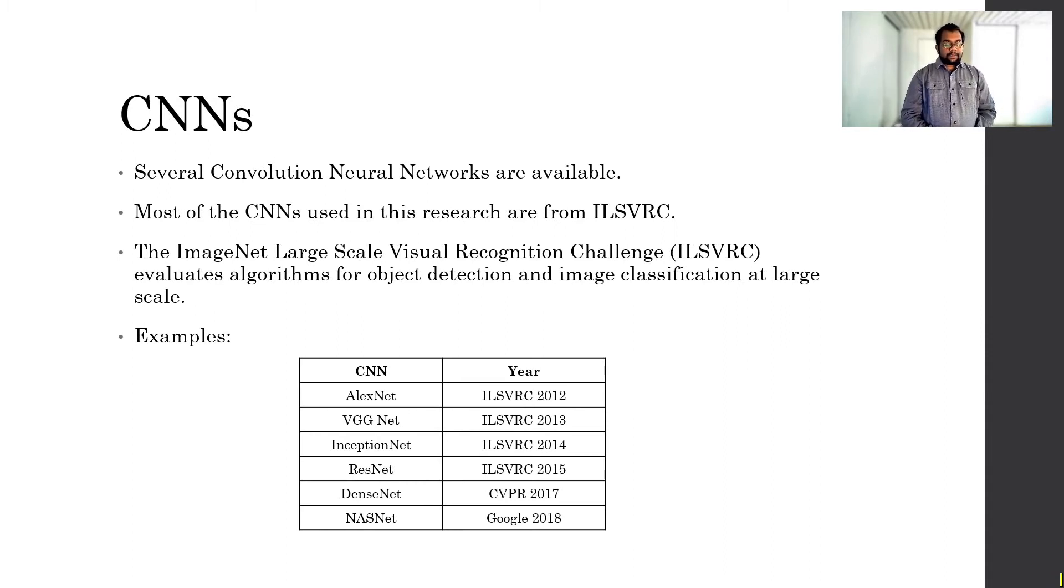There are many different architectures of CNNs available. Most of the CNNs used in our research are from the ILSVRC, which is the ImageNet Large Scale Visual Recognition Challenge. It evaluates different algorithms for object detection and image classification. For example, we have AlexNet, which came in 2012. Then we have VGG in 2013, InceptionNet in 2014, ResNet in 2015, DenseNet in 2017, and NASNet from Google published in 2018, and so on.